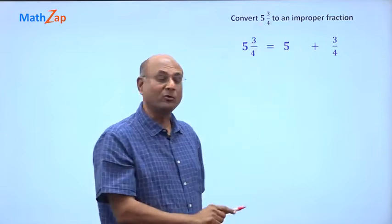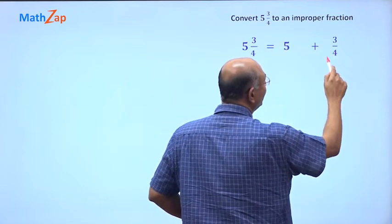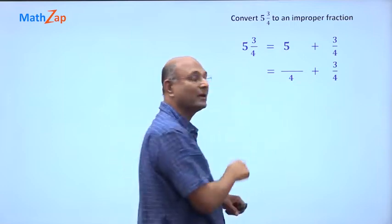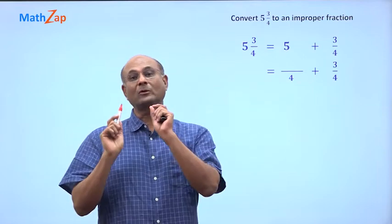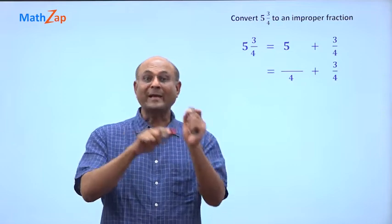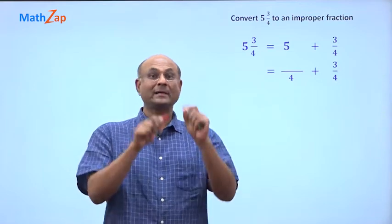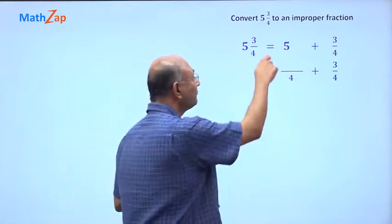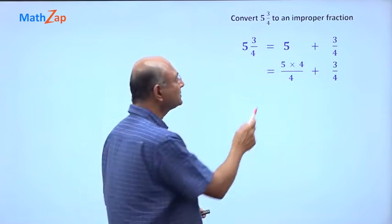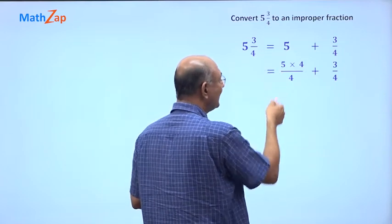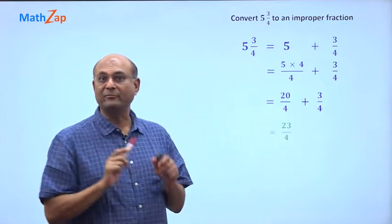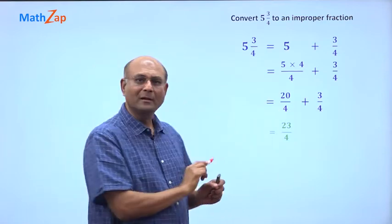5 plus 3 by 4. There is a 4 denominator here, so 5 must also be written with 4 as the denominator. How do I do that? Well, you know that 1 is 4 by 4, 2 is 2 times 4 by 4, 3 is 3 times 4 by 4, 5 will be 5 times 4 by 4. What is 5 times 4? 20. So this is 20 by 4, 3 by 4. So totally 23 by 4. Very simple but a little long.